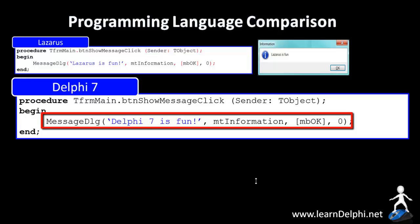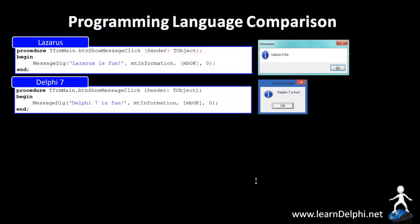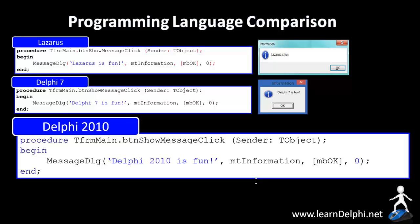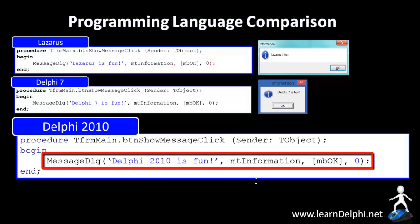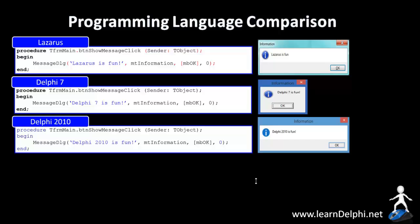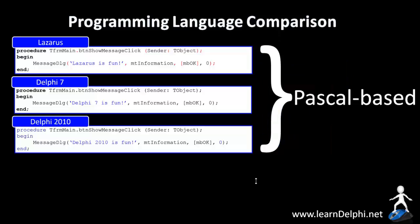This instruction will instruct the compiler to show a message box that reads 'Lazarus is fun.' This Delphi instruction will also instruct the compiler to show a message box with the message 'It is fun to program with Delphi 2010.' Notice that all three these code snippets are exactly the same. Code that you will learn in these lessons can be applied to any version of Delphi and any other Pascal-based programming language like Lazarus.